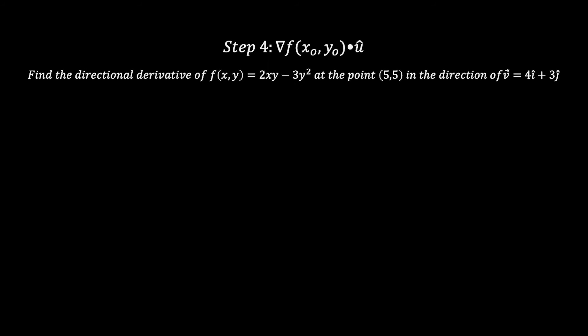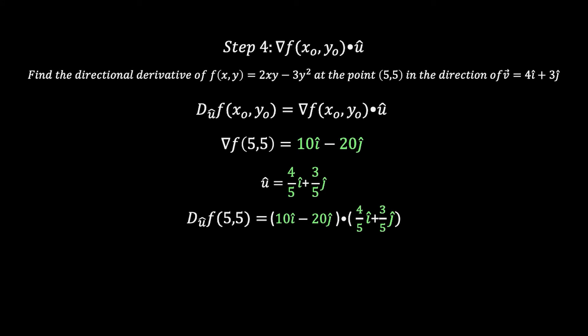Let's move on to the fourth and final step. We know that we have to dot product our vectors together that we found in steps two and three. We have our gradient, we have our unit vector, so let's simply dot product these together.